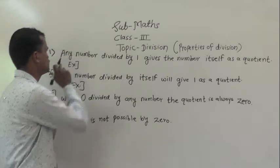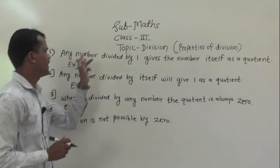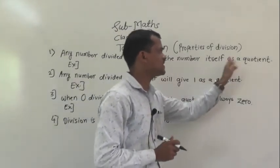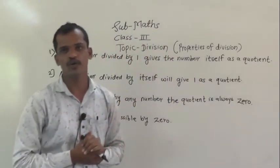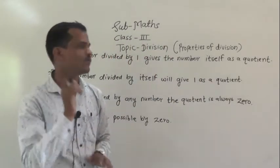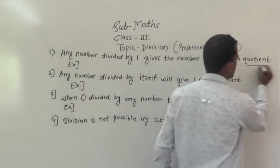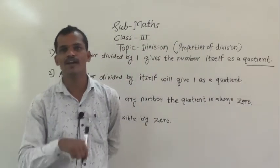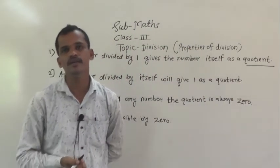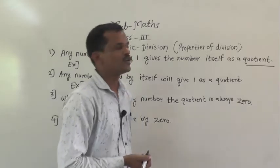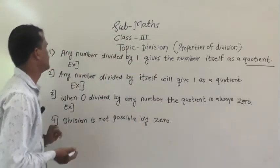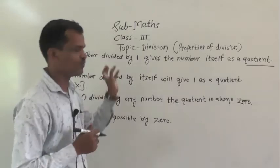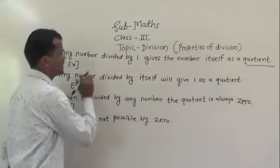Let us start the first property: any number divided by 1 gives the number itself as a quotient. What is the meaning of quotient? Quotient is the result of the division, or the answer of the division example. This first property states that any number divided by 1 gives that same number as the quotient. We will see one example so you will understand.